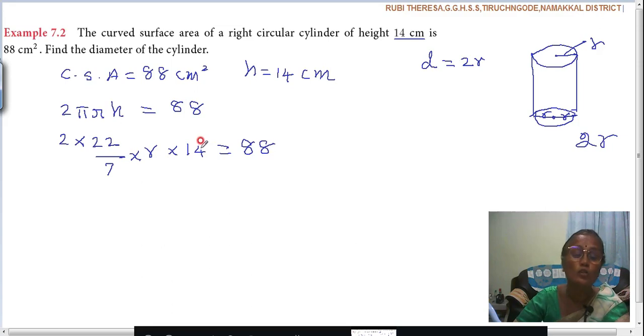What do you want to find out here? 2R. Do you follow? Just you make an arrangement, then you can do the calculation. 2 into R. 2 into R into 22 by 7 into 14.